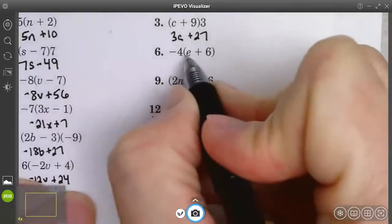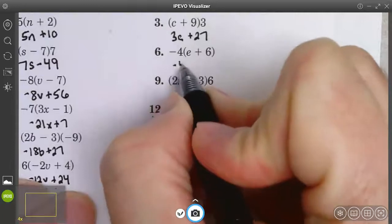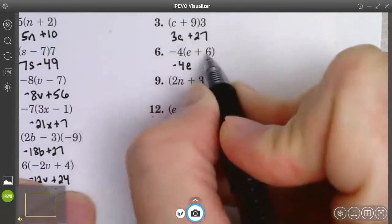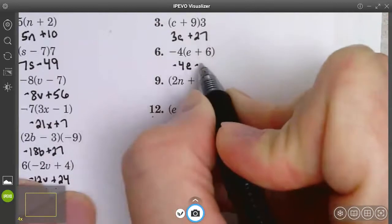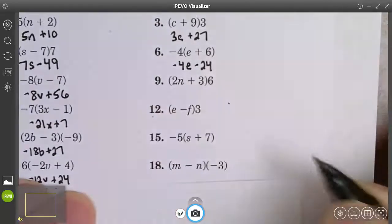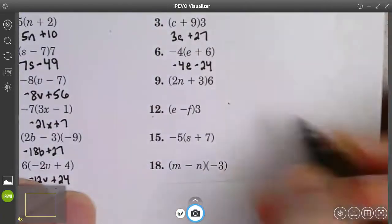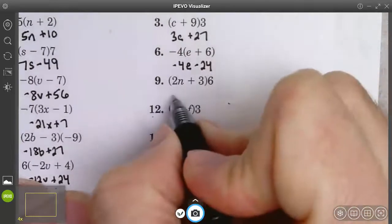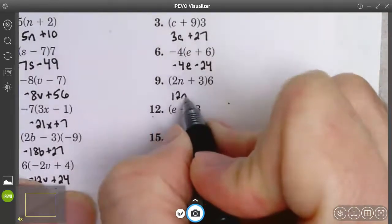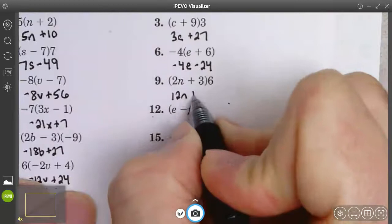Negative 4 times e is negative 4e. Negative 4 times 6 is negative 24. 6 times 2n is 12n. 6 times 3 is 18.